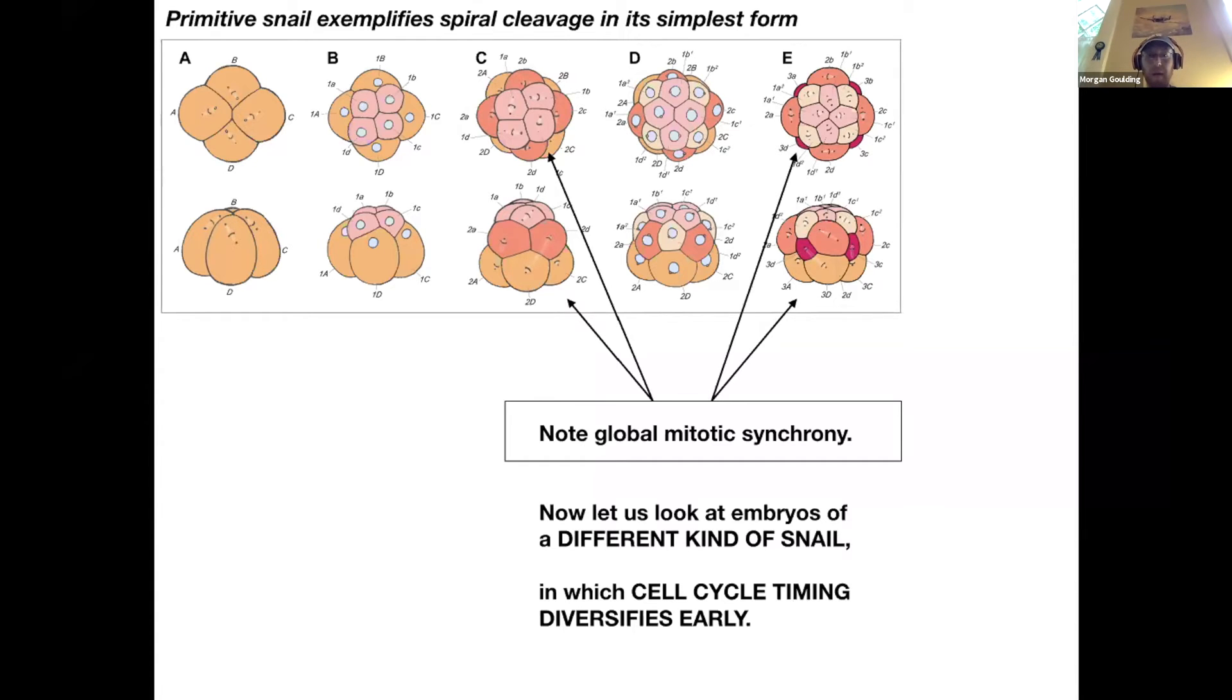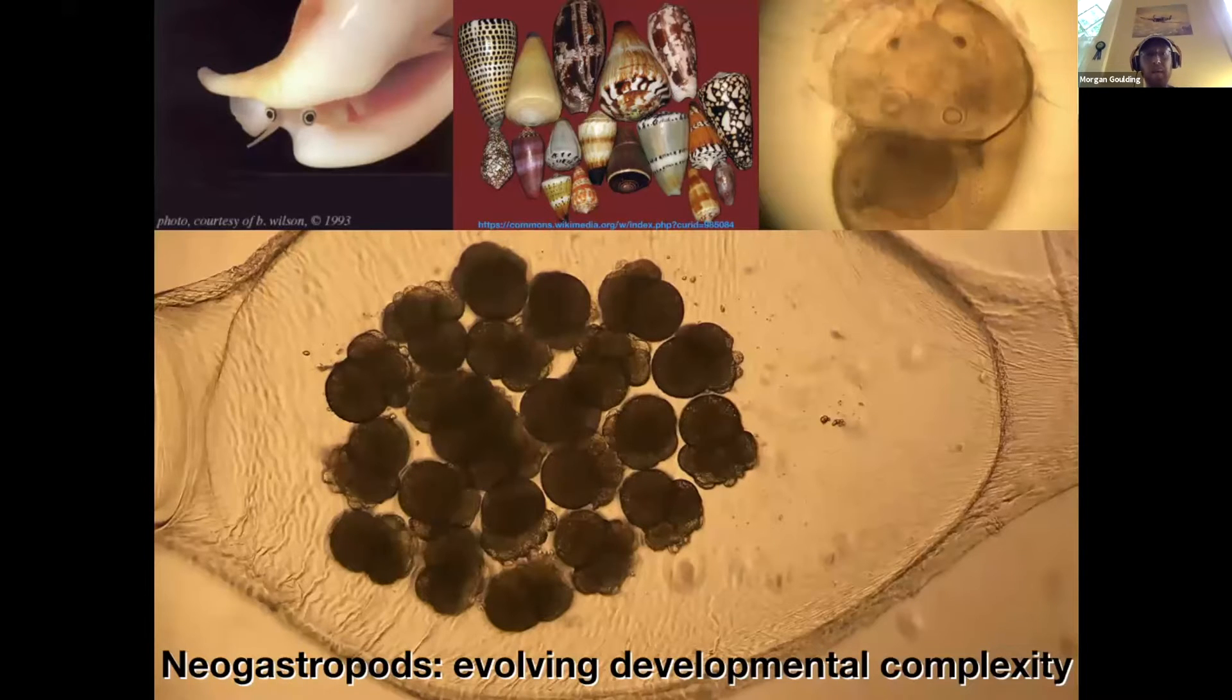That's not what I'm going to talk about today. I'm going to talk about a situation in a different kind of snail where every cell gets its own unique identity from the get-go. And mitotic asynchrony starts out really early, and I'm interested in how that works.